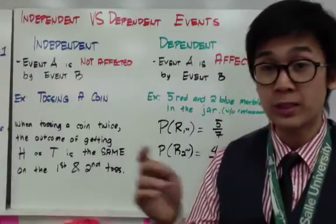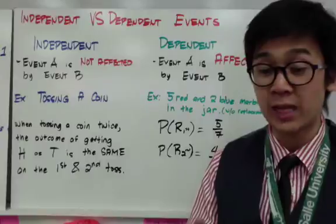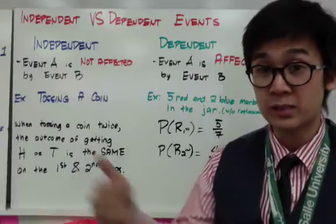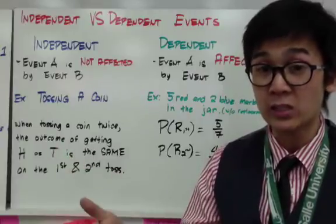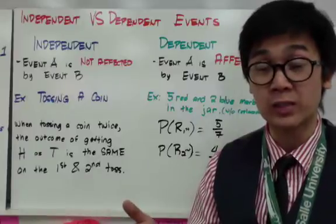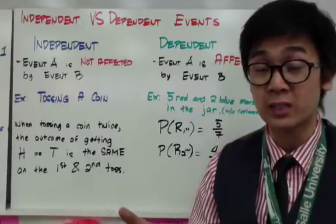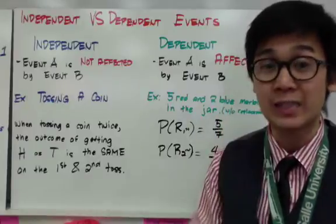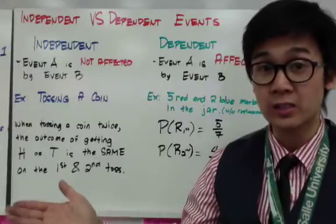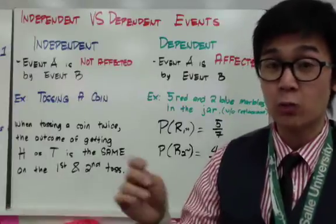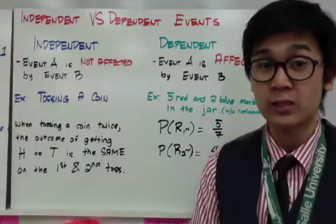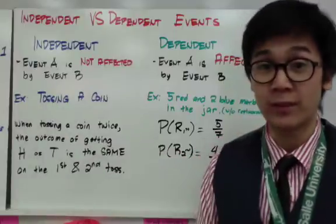The probability of getting tails or heads on the first toss will still be the same on the second toss — the probability remains consistent. That's why it's independent. The first toss is not affected by the second toss when flipping a coin twice, making this an independent event.